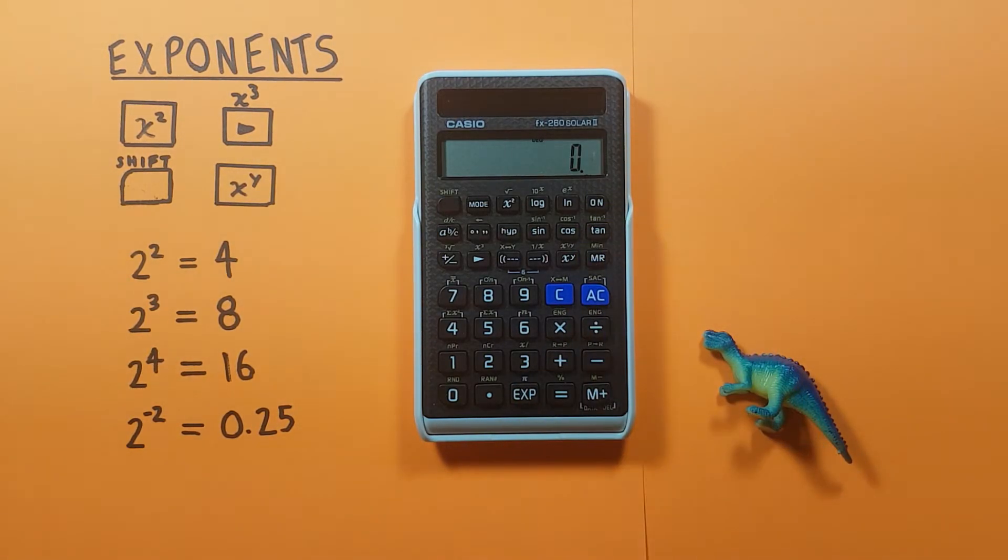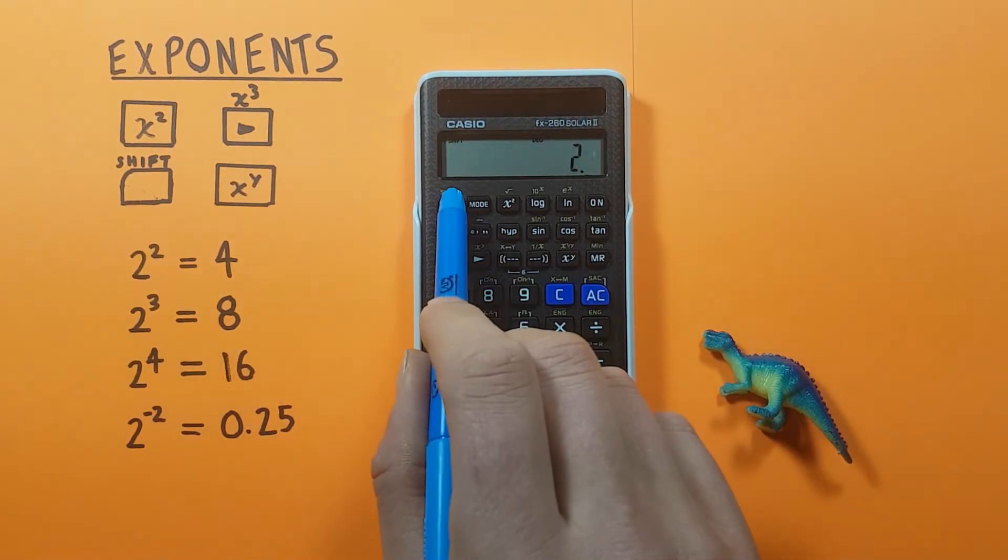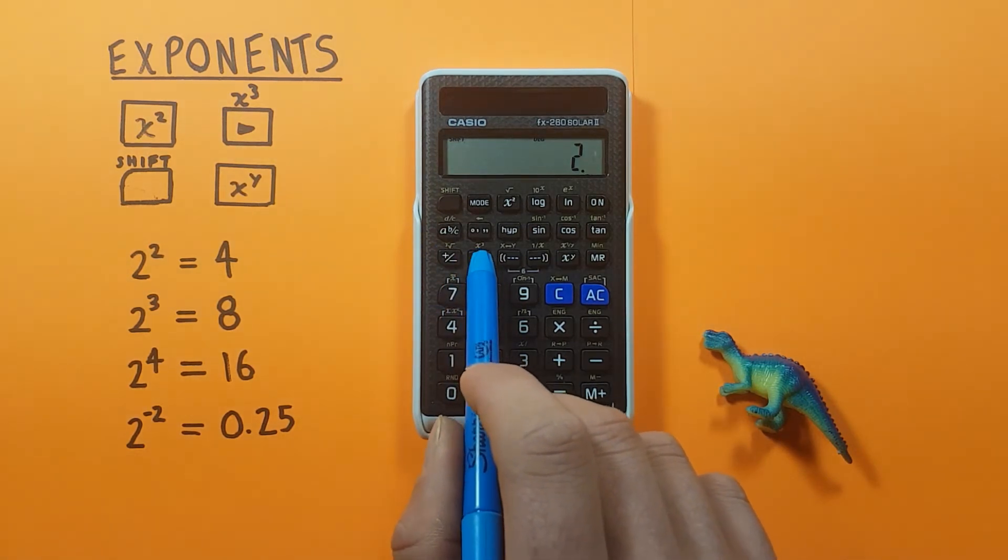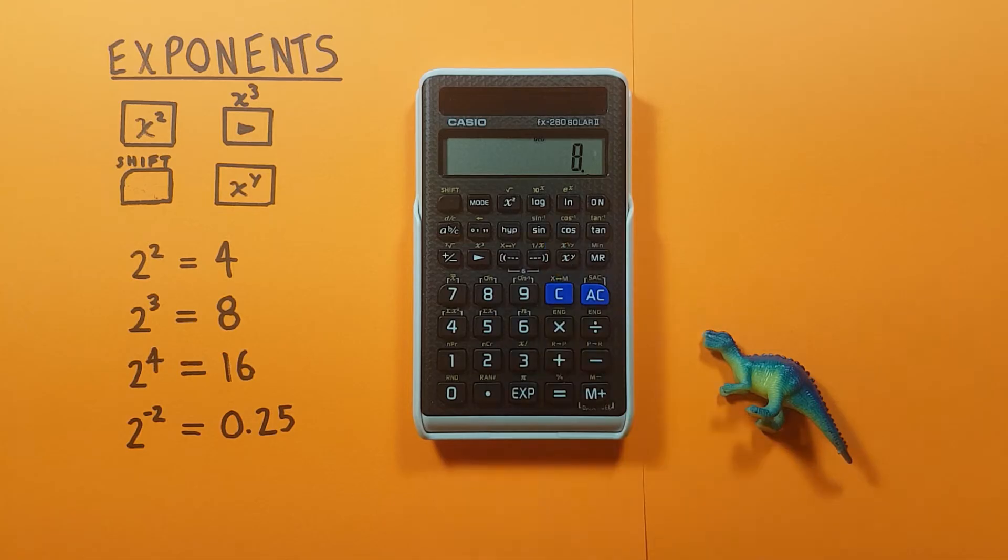If we want to cube a number, again we place the number on the screen and then press the shift backspace key with the shift function of x cubed and this gives us the correct answer. 2 cubed is 8.